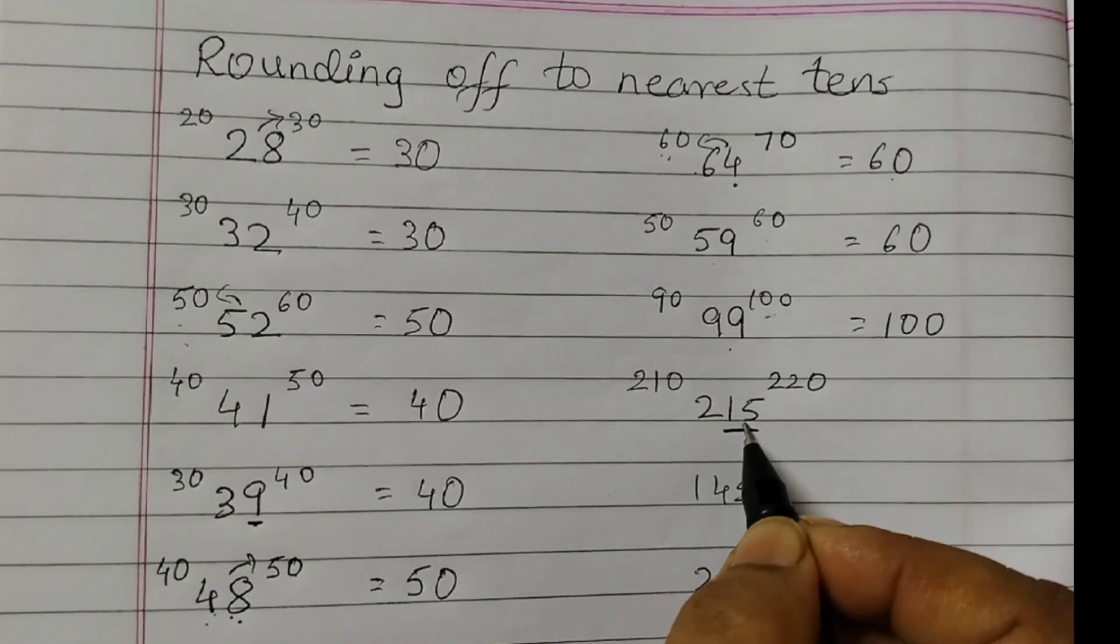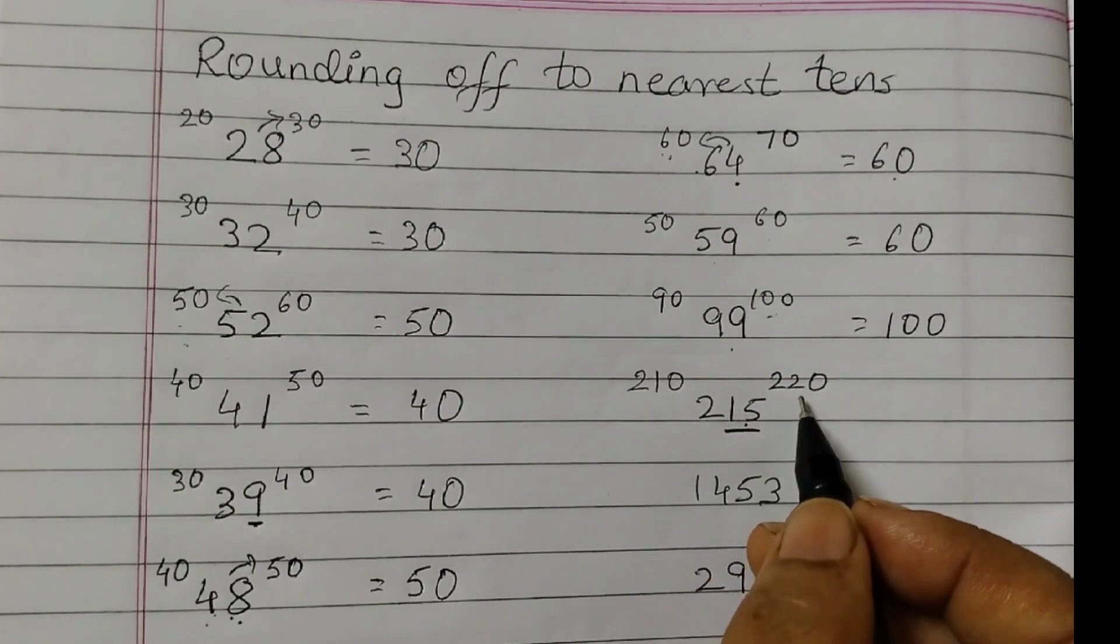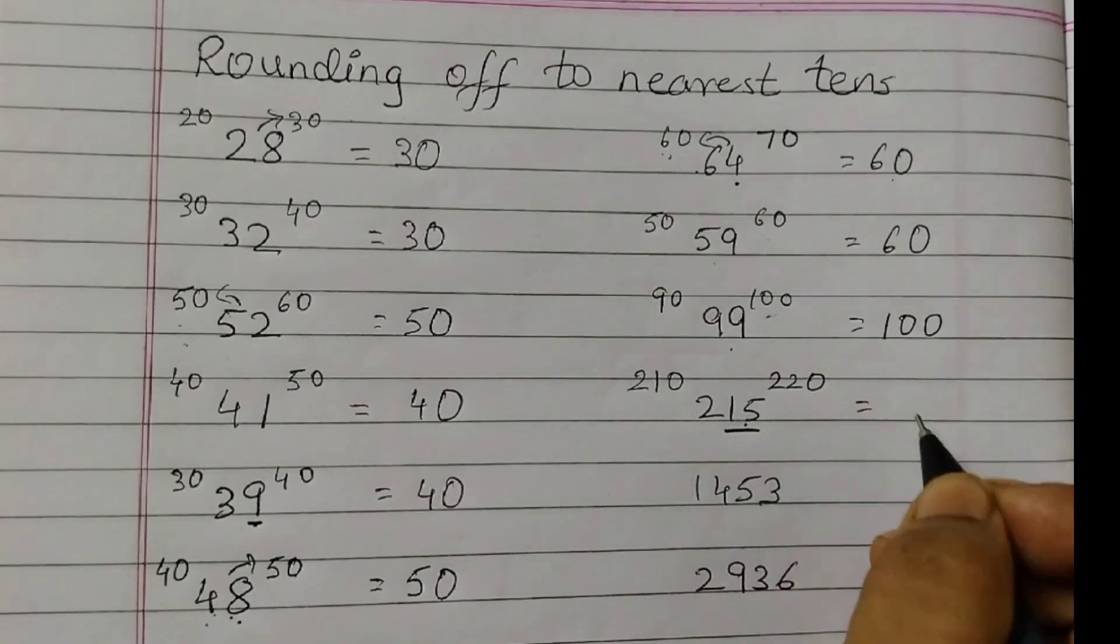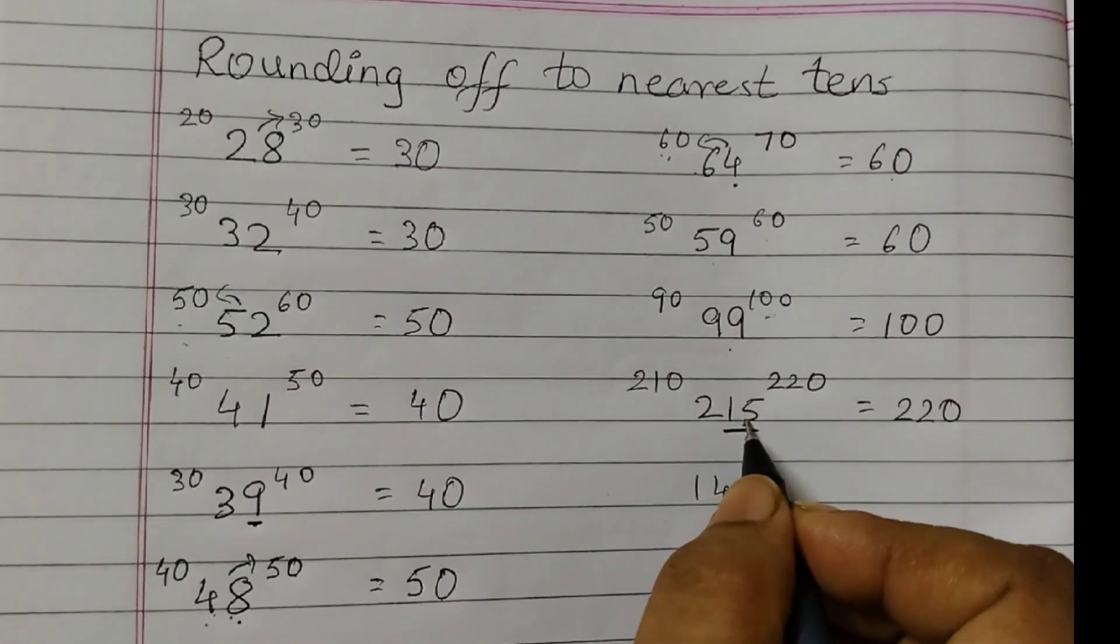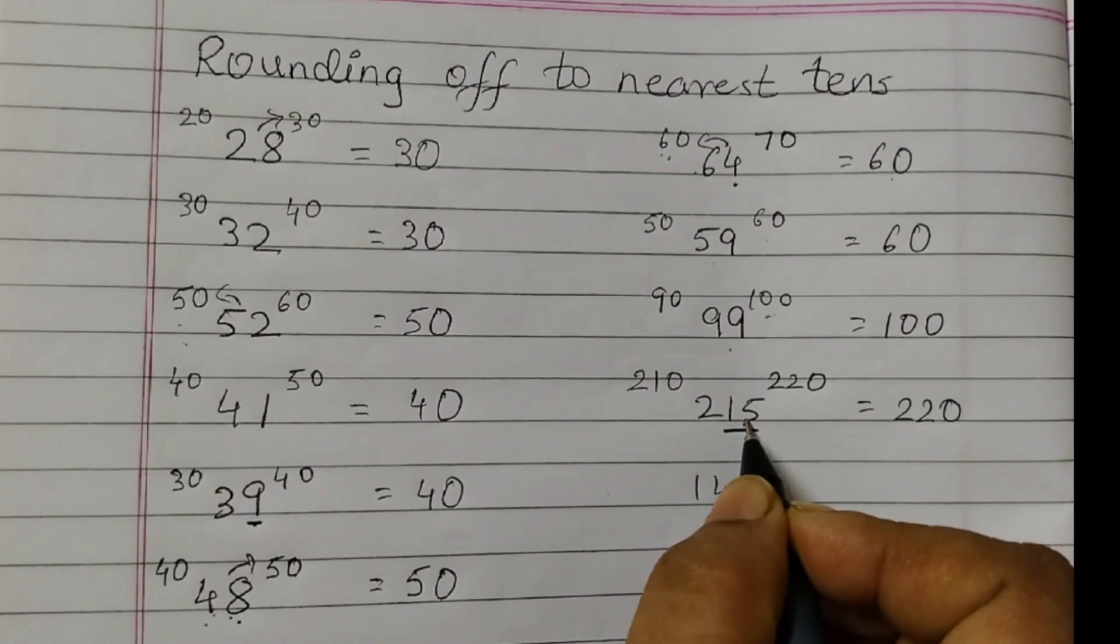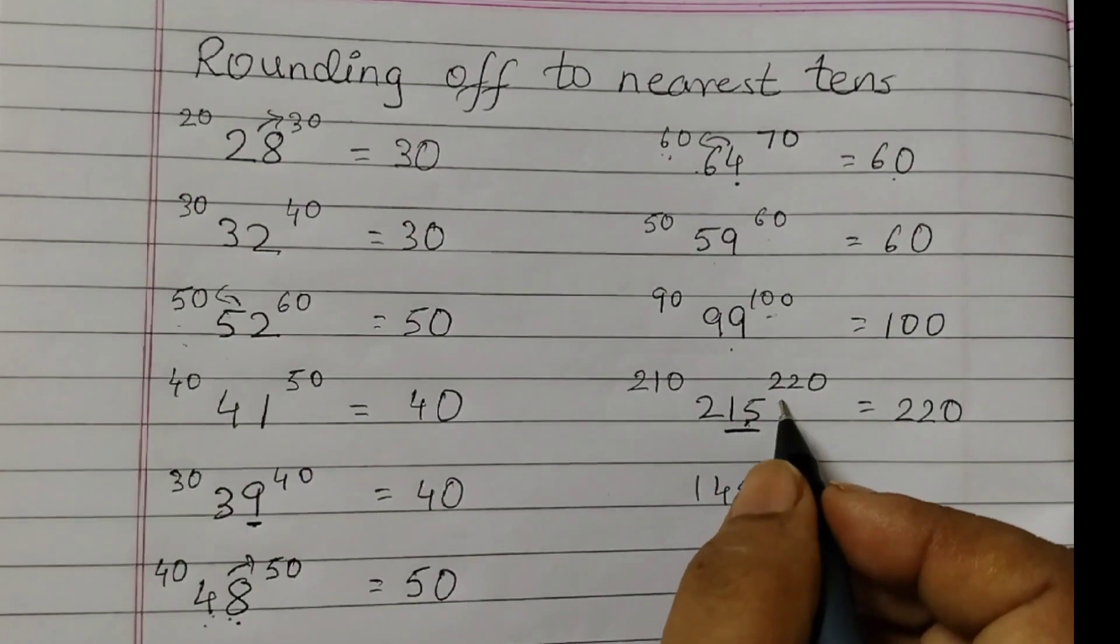And since it's 5 here, we will take it as 220. It's a common practice, because 5 is equidistant from 0 and 10. But it's common practice to take this to the next higher number.